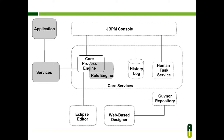Your application services typically invoke the core engine to start processes or to signal events whenever necessary. An optional core service is the history log, that will log all information about the current and previous state of all your process instances. Another optional core service is the human task service, that will take care of the human task life cycle if human actors participate in the process.